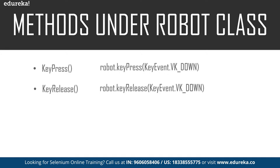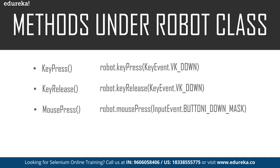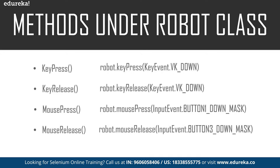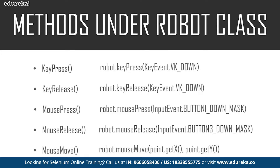Now let's look at the methods used to handle mouse functions. We have the mousePress method, which is used to press the left button of the mouse. Then we have the mouseRelease method, which is used to release the pressed button of the mouse. Finally, we have the mouseMove method, which moves the mouse pointer to specified X and Y coordinates. The command is: robot.mouseMove(x, y), specifying the coordinates of the X and Y axes.